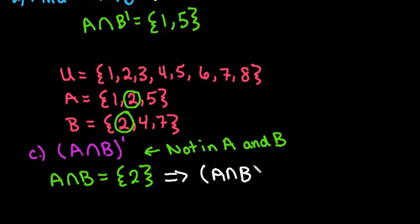So we would look for all values that are not in both A and B. So that basically leaves everything else. The only one that's in both of them is 2. So everything else in the universal set would be contained in (A ∩ B)'. So 1, 3, 4, 5, 6, 7, and 8 would be our answer.